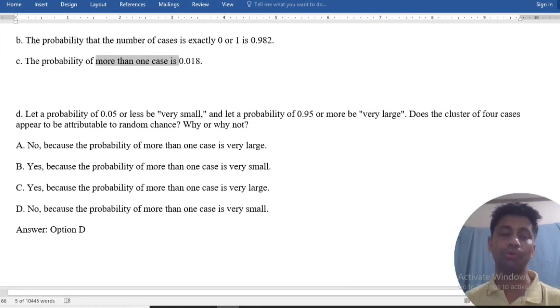Let a probability of 0.05 or less be very small, and a probability of 0.95 or more be very large. Does the cluster of four cases appear to be attributable to random chance? Why or why not?